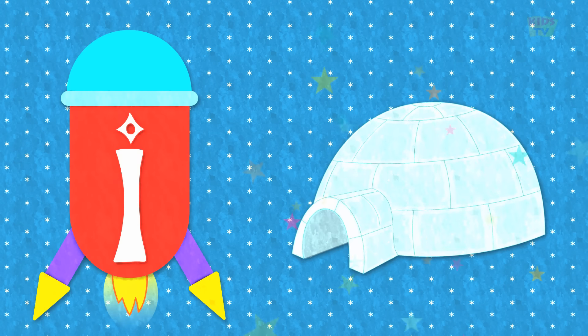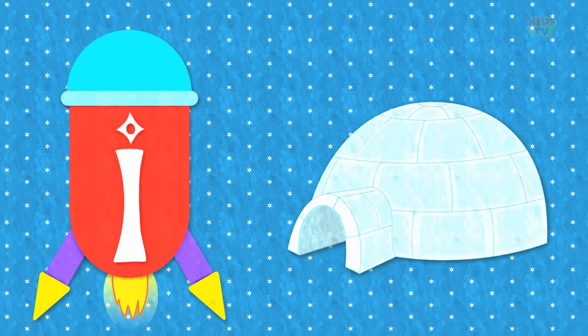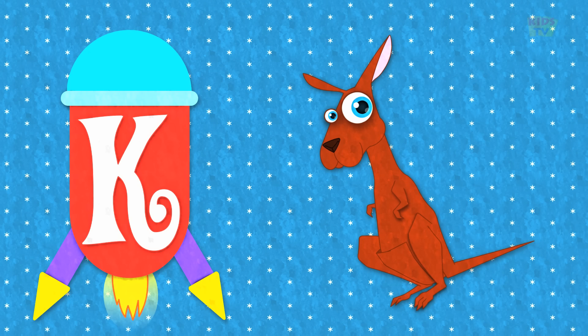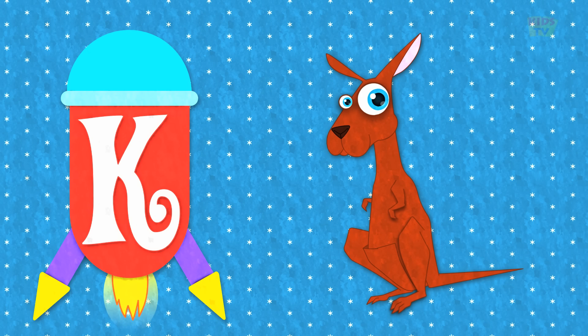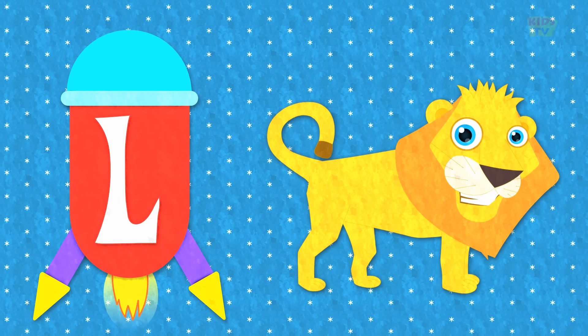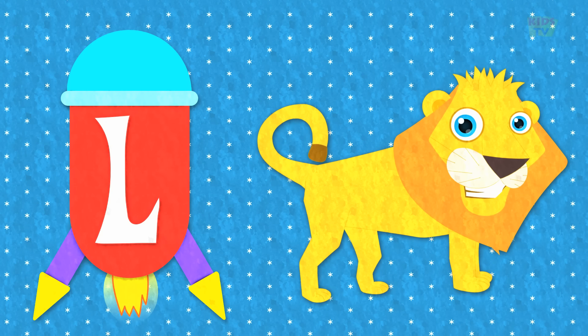I is for igloo, i-i-igloo. J is for jump, j-j-jump. K is for kangaroo, k-k-kangaroo. L is for lion, l-l-lion.